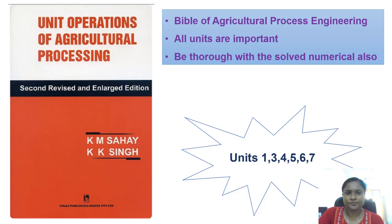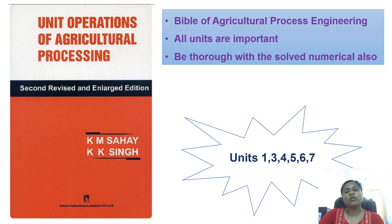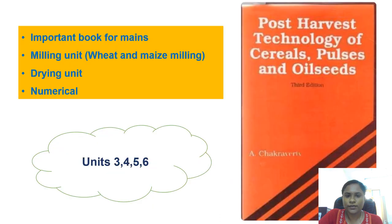Here I am discussing some basic books which you can use to cover the syllabus. The bible of agriculture process engineering is the book 'Unit Operations of Agricultural Processing' by K.M. Sahai and K.K. Singh. All units in this book are important and you have to cover the whole book thoroughly, including the solved numericals. Units 1, 3, 4, 5, 6, and 7 can be majorly covered using this book. The next important book is 'Post Harvest Technology of Cereals, Pulses and Oil Seeds' by Amlendu Chakravarti.